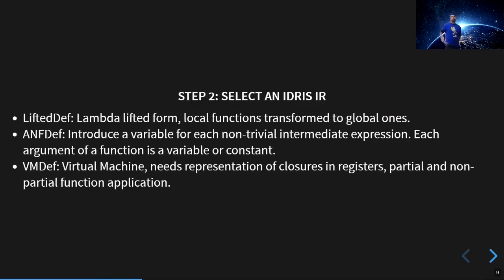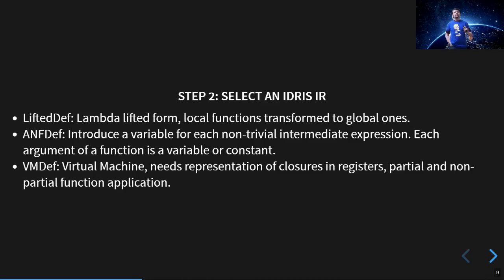Step two: I had to select an Idris IR. If you write your own Idris backend, you have to do the same. There are three different Idris IRs: the Lifted IR, the ANF IR, and the VM IR. Coming from top to bottom, we get closer and closer to the machine. It's worth thinking about what your backend technology supports and how to represent the information from these different representations.